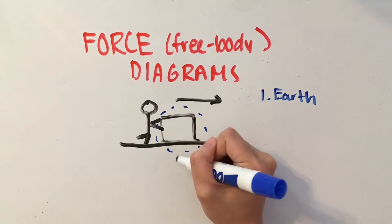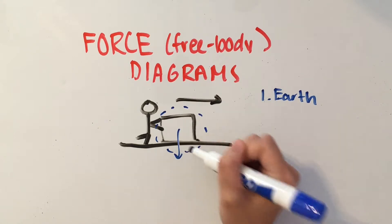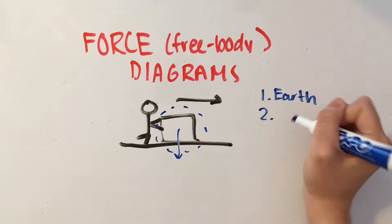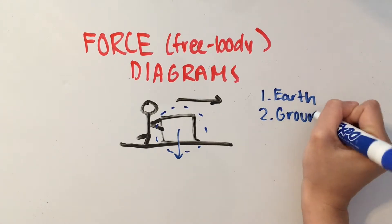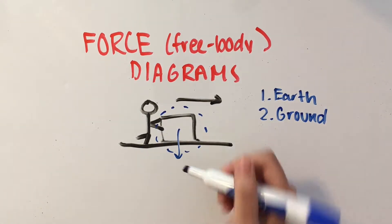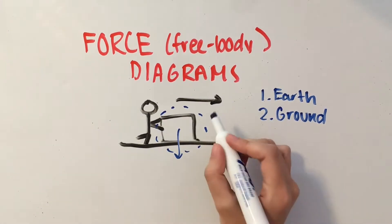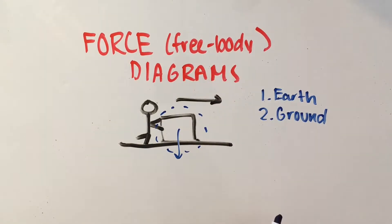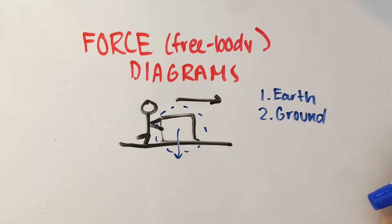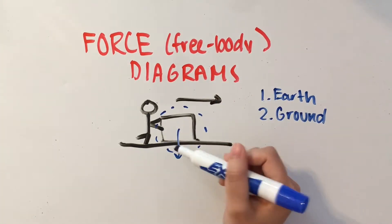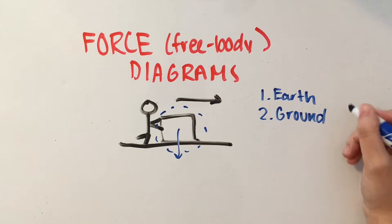It's going to be experiencing a downward force, which is counteracted by the upward force that the ground exerts on the box. The ground is going to be keeping the box from dropping down into the center of the earth, so we can say that the ground is pushing up on the box the opposite direction that the earth is pulling down on it.